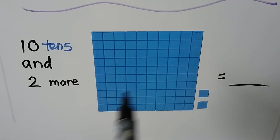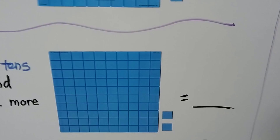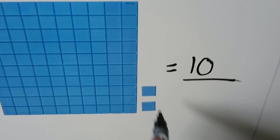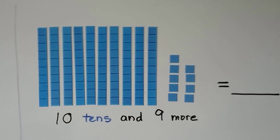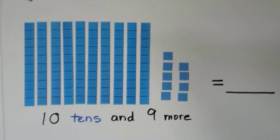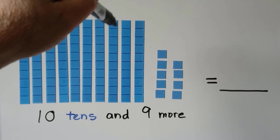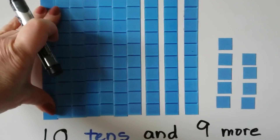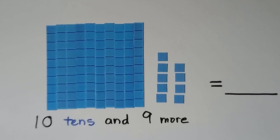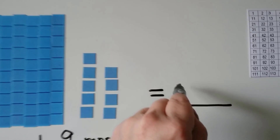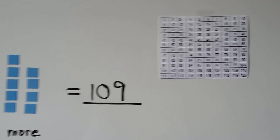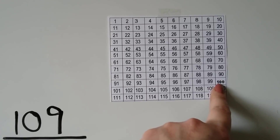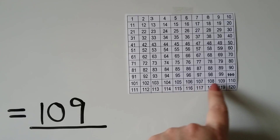Here we have ten tens and two more — ten tens and two ones in the ones place. We have one hundred two. Here we have ten tens and nine more. Here are ten tens: one, two, three, four, five, six, seven, eight, nine, ten. We can push them together to make the square. Ten tens and nine more. We can write a ten and a nine in the ones place. We have one hundred nine. We look on our chart — here's the ten tens — one hundred and nine more would be one hundred nine.